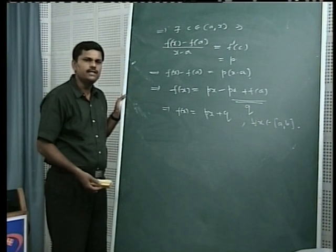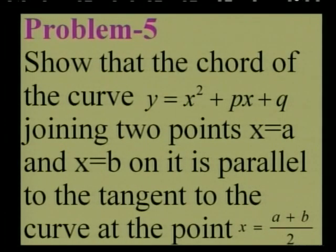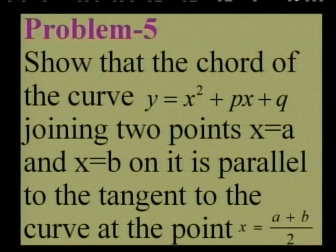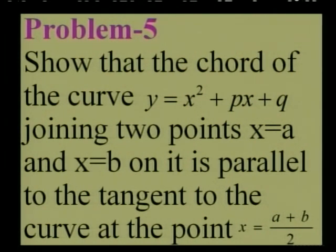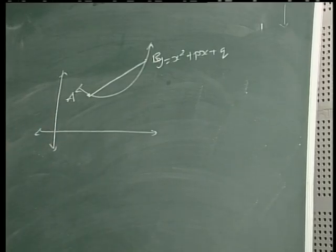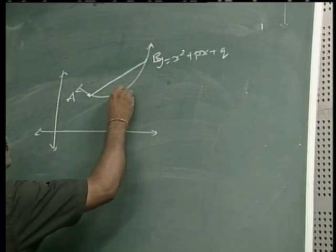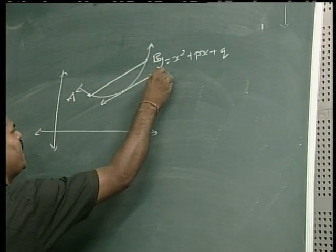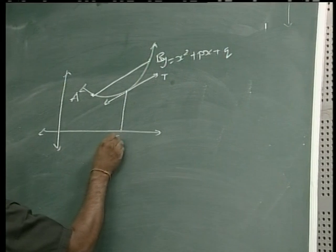Now let us go to the next problem. The problem is: show that the chord of the curve y² = px + q joining the two points x = a and x = b on it is parallel to the tangent to the curve at the point x = (a+b)/2. Let us see this by a figure — this is the graph of y = x² + px + q. We take two points a and b on this curve, and the chord joining these two points is parallel to at least one tangent t at some point, which we want to show is (a+b)/2.